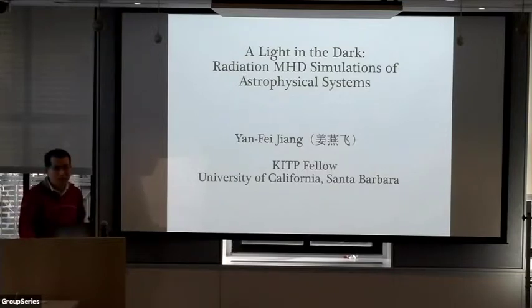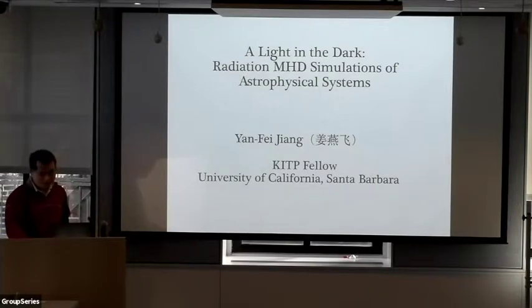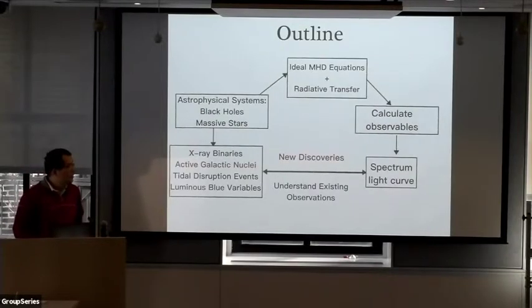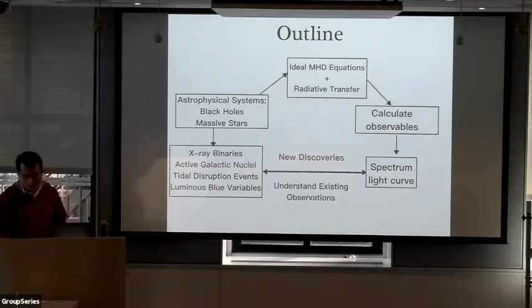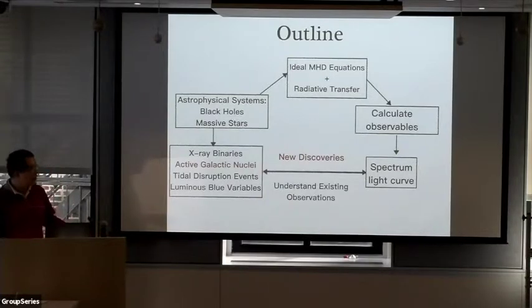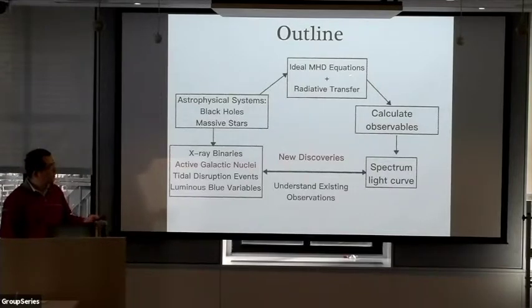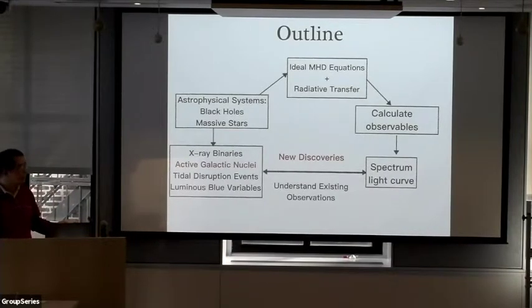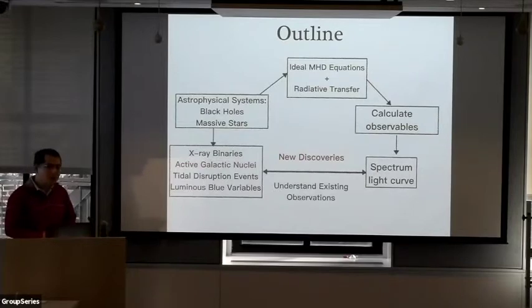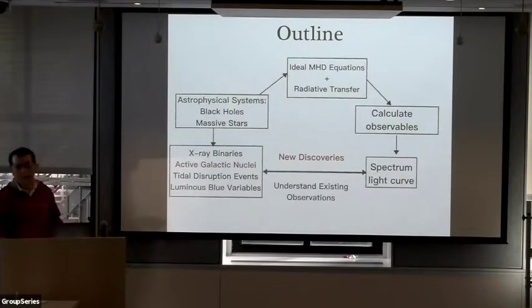Feel free to interrupt and ask any questions if anything seems unclear. The basic picture is that we were doing simulations motivated by different astrophysical systems that have a lot of things in common — for example, black hole accretion disks and neutron stars. For particular systems like X-ray binaries and AGNs, we use the idea of the radiation transfer process, which I will describe, to model these systems.